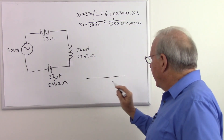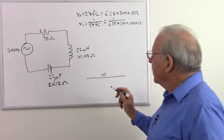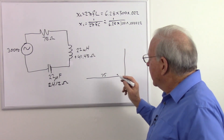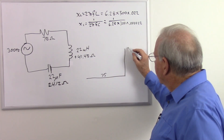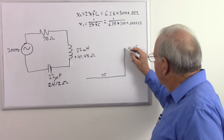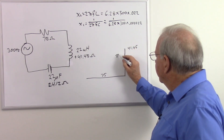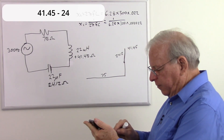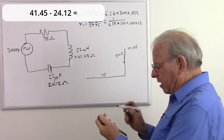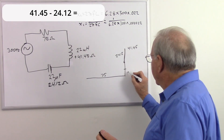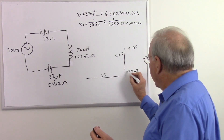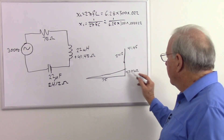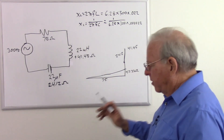We make our triangle: 75 ohms horizontal, 41.45 ohms of inductive reactance up, then subtract 24.12 ohms of capacitive reactance. So 41.45 minus 24.12 gives us a total of positive 17.33 ohms. It's positive because we had more inductive reactance than capacitive reactance, leaving us with a net inductive reactance.